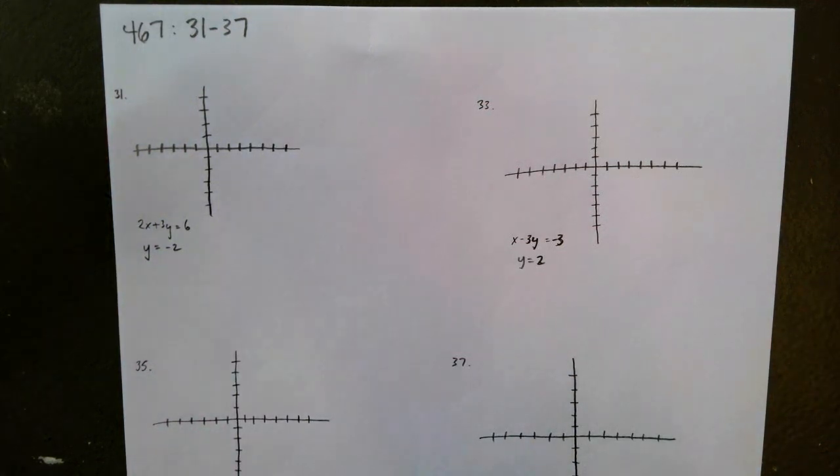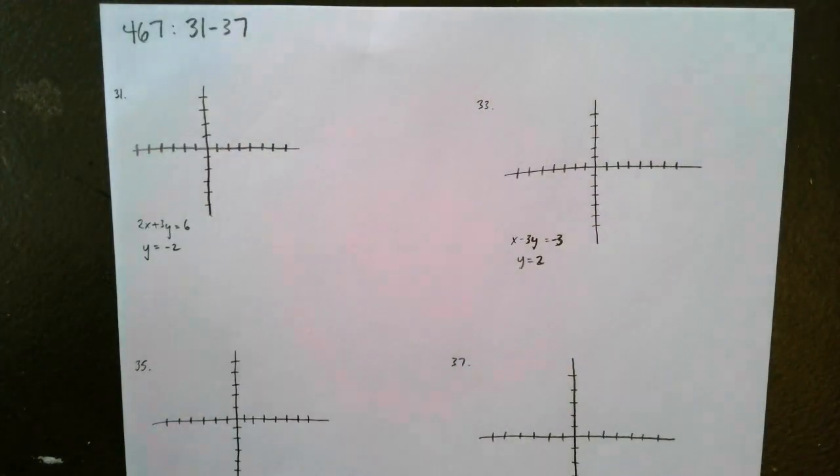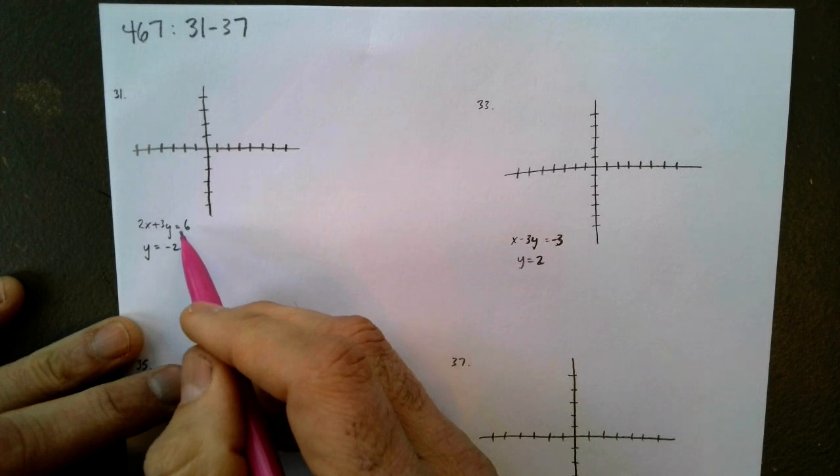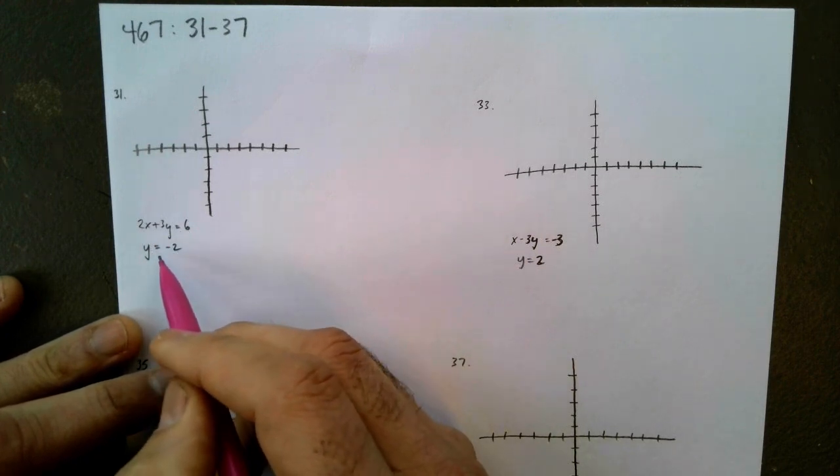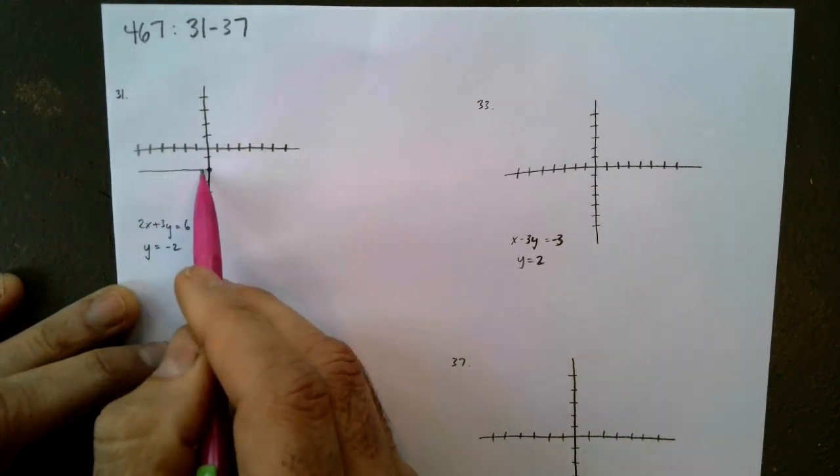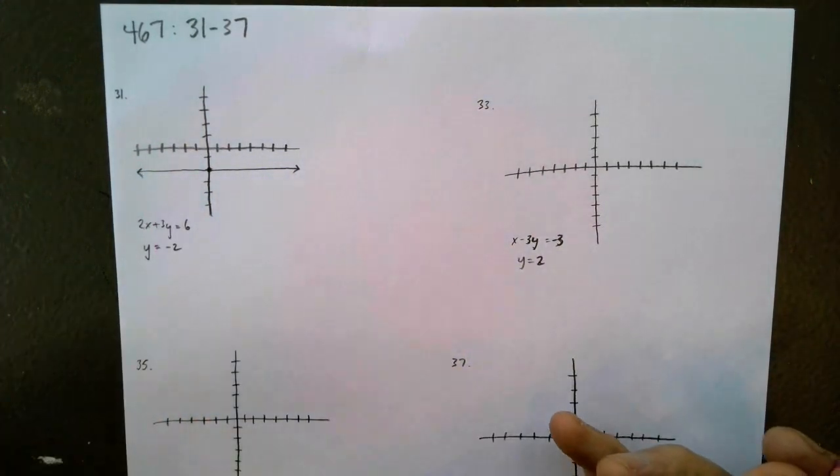Okay, here we go on numbers 31 to 37. Let's get a little focus in. Okay, now 2x plus 3y equals 6 and then y equals negative 2. Well, I'm going to go ahead and graph y equals negative 2 first because if you'll remember, that's a solid horizontal line going across like that.